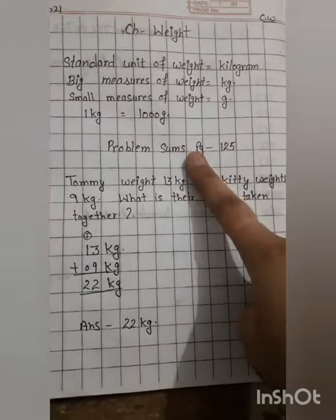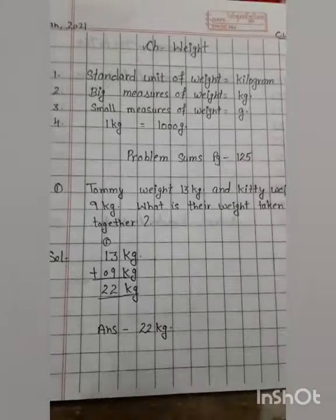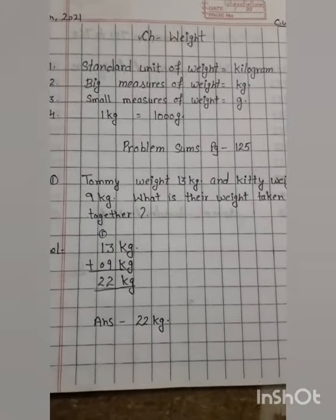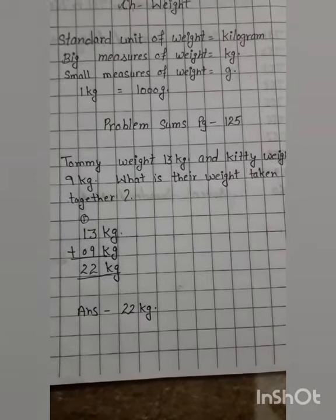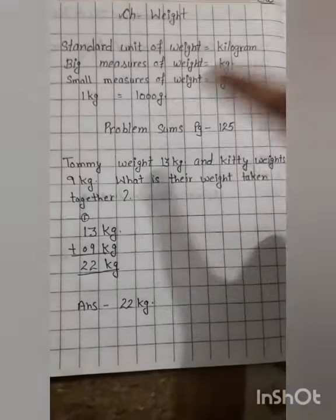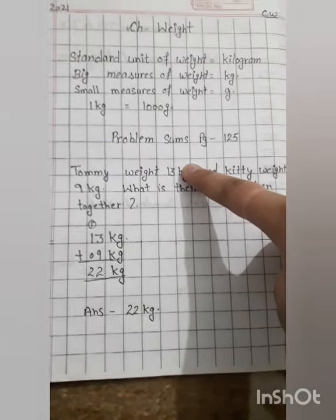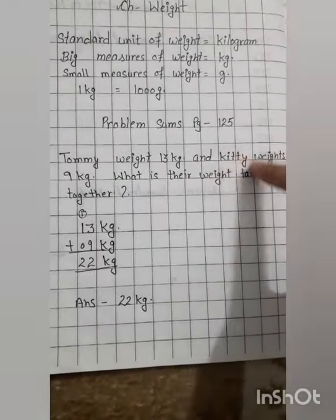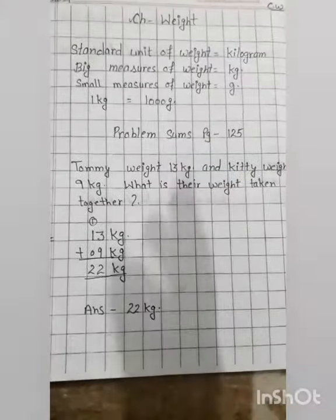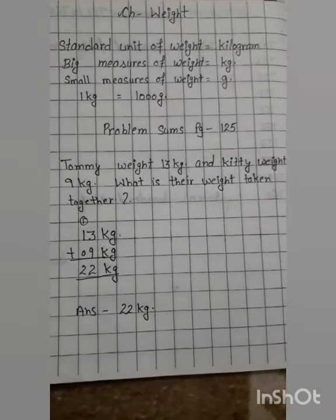Now write problem sums, page number 125. Tommy weighs 13 kg and Kitty weighs 9 kg. What is their weight taken together? Tommy's weight is 13 kg, Kitty's weight is 9 kg. Together means total. What is their total weight? So we have to do addition.